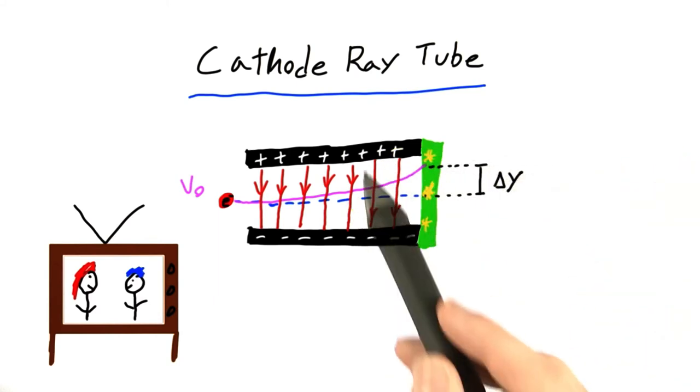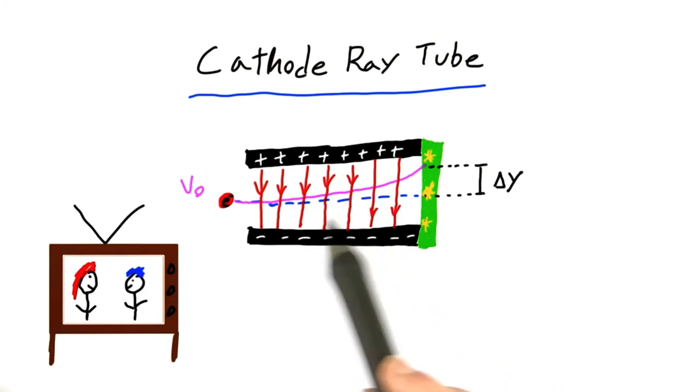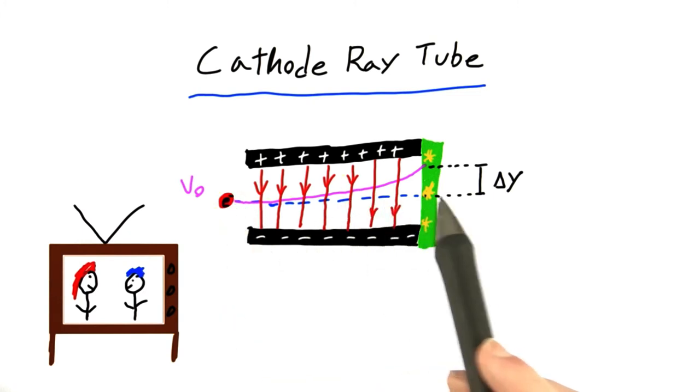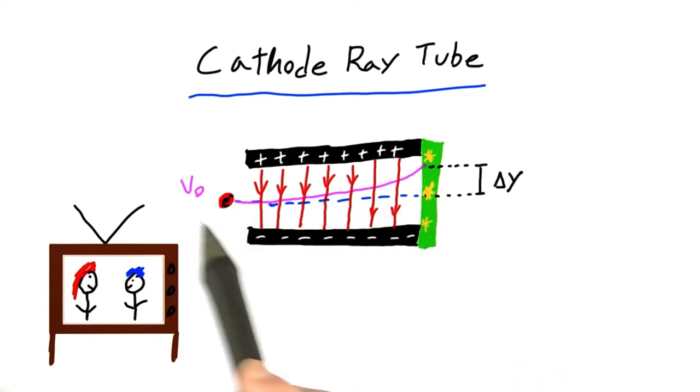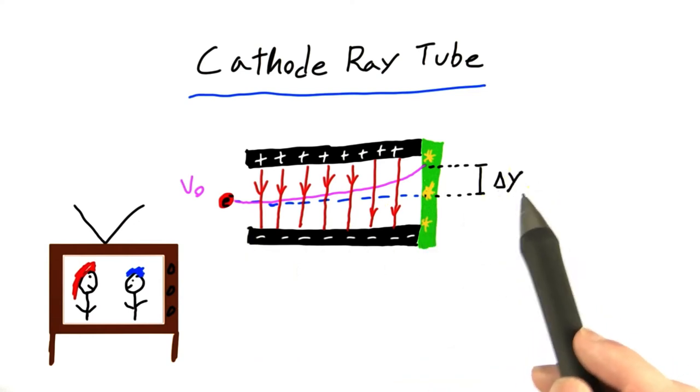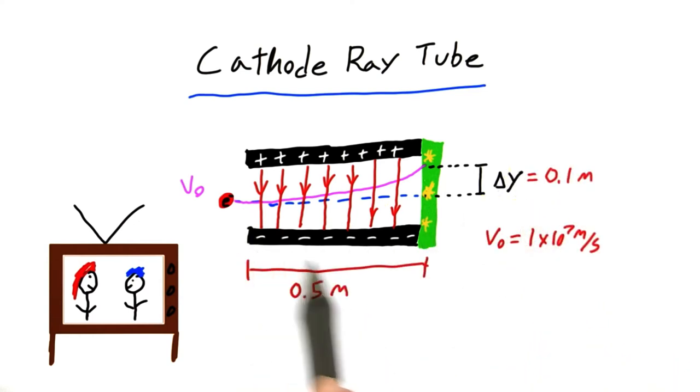So for this problem, you're going to tell me how strong I should make this electric field, such that this electron gets bent a distance away from the center, from its straight line path, of delta y. So you should assume that the electron is in the electric field for a total distance of 0.5 meters, and we want the deviation away from the center, delta y, to be equal to 0.1 meters.